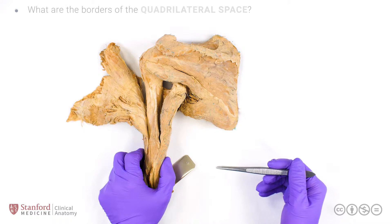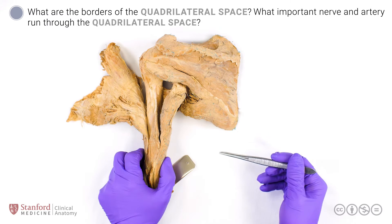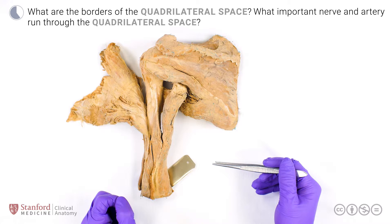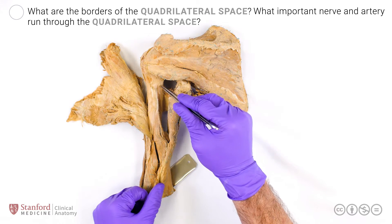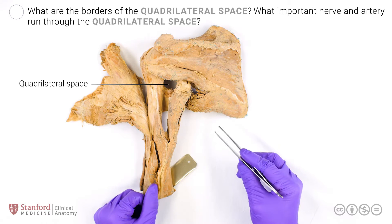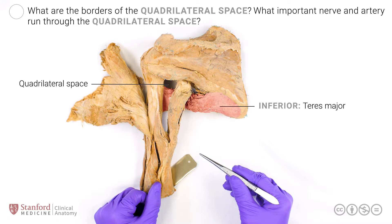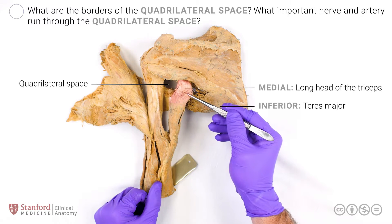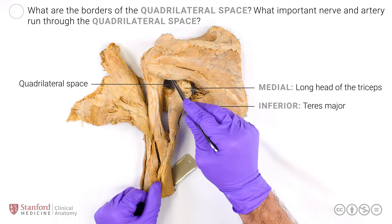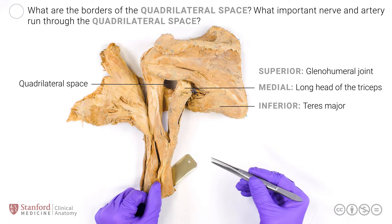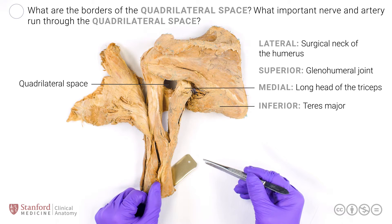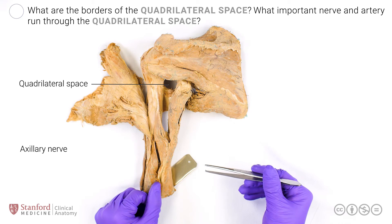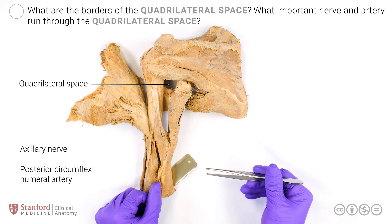Next question: what are the borders of the quadrilateral space and what important nerve and artery run through the quadrilateral space? The quadrilateral space, seen here, is bordered on the inferior side by teres major, on the medial side by the long head of the triceps, on the superior side by the inferior aspect of the glenohumeral joint, and on the lateral side by the surgical neck of the humerus. The axillary nerve and the posterior circumflex humeral artery run through the quadrilateral space.